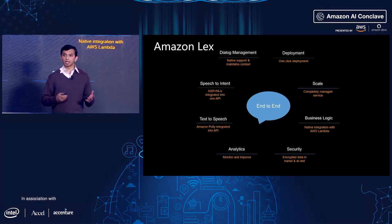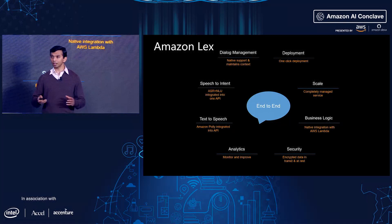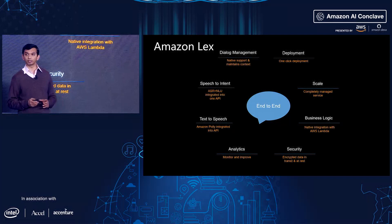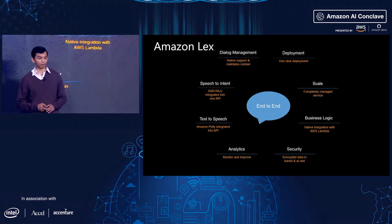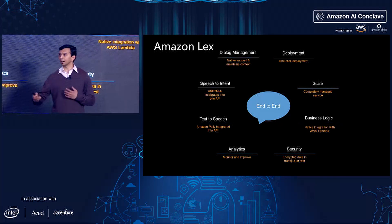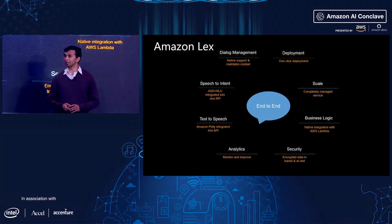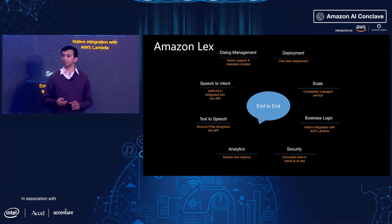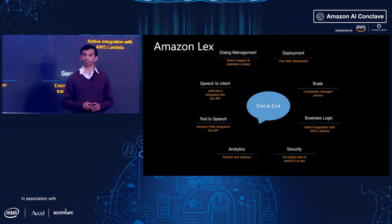Deployment: once you build your bot, you can have a multi-channel experience — the same experience on your website, mobile app, on your phone as an IVR, on platforms such as Facebook Messenger, SMS, or Alexa. Scale: because it's a managed service, you don't have to worry about managing servers. Business logic is a really important piece, because a conversational bot only helps you understand what the customer is saying — you still have to take actions and execute code. For that, we provide integration with Lambda, which makes it convenient to run your business logic once the conversational part is done.